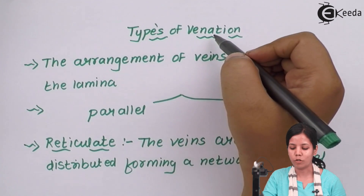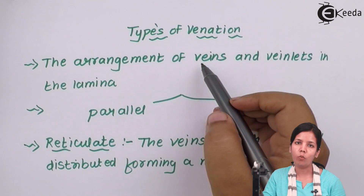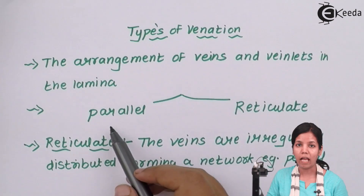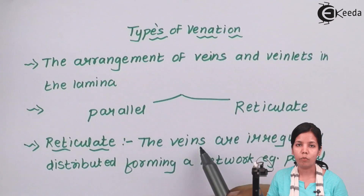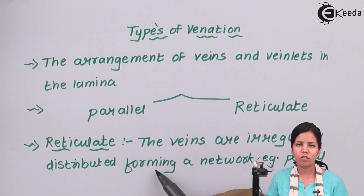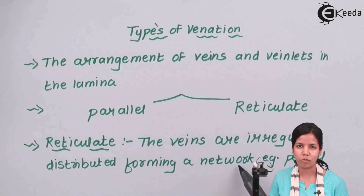Venation is nothing but the arrangement of veins or veinlets in the lamina of a leaf. Venation could be of two types: parallel venation and reticulate venation. In reticulate venation, the veins run irregularly — not parallel to each other. They are distributed to form a mesh-like, crisscross network. An example of this is the peepal leaf.